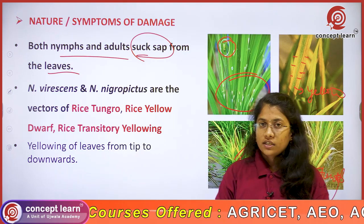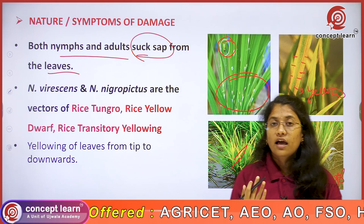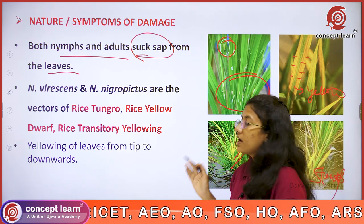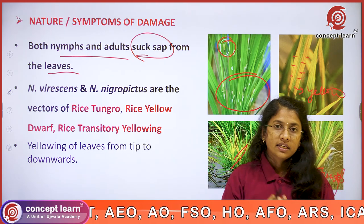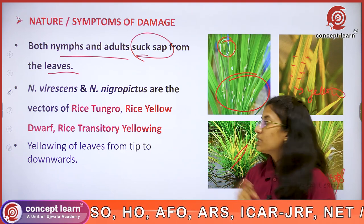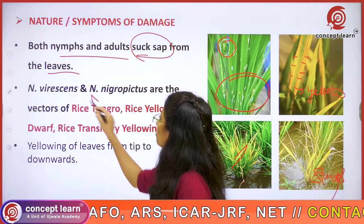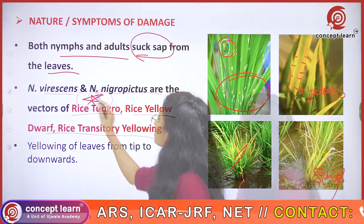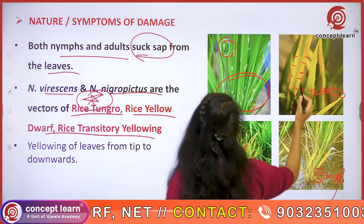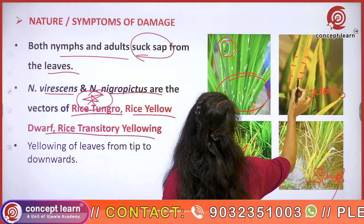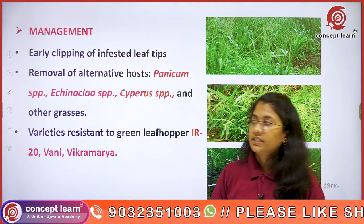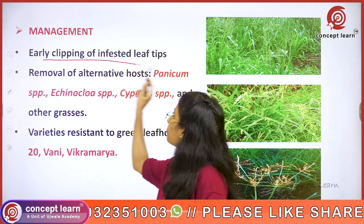Both Nephotettix virescens and Nephotettix nigropictus normally cause direct damage, but in some cases they also transmit diseases, which incurs huge losses within the crops. Yellowing happens from the tips downwards.